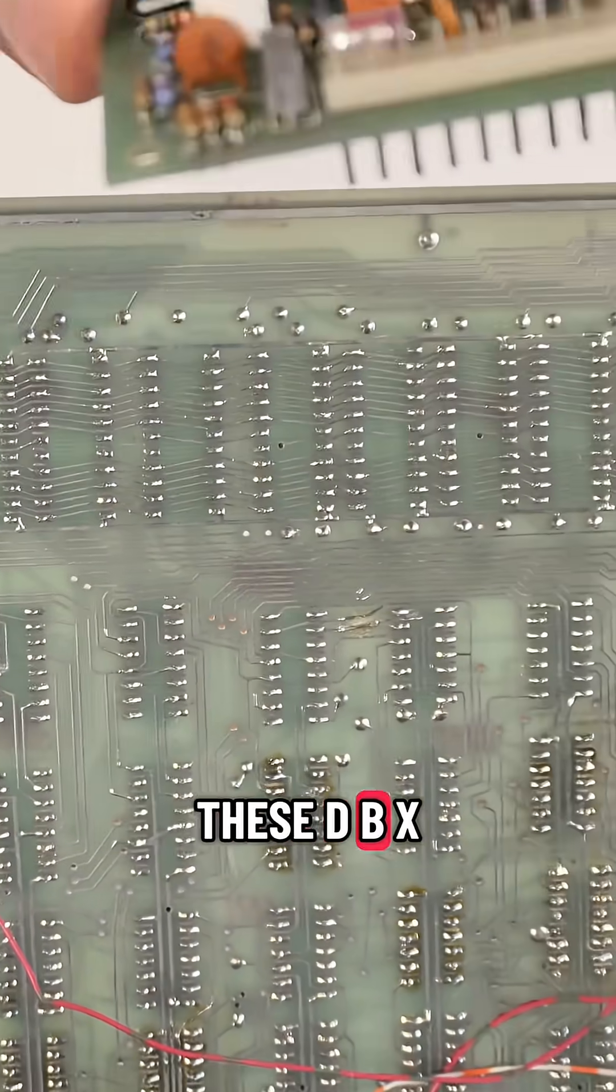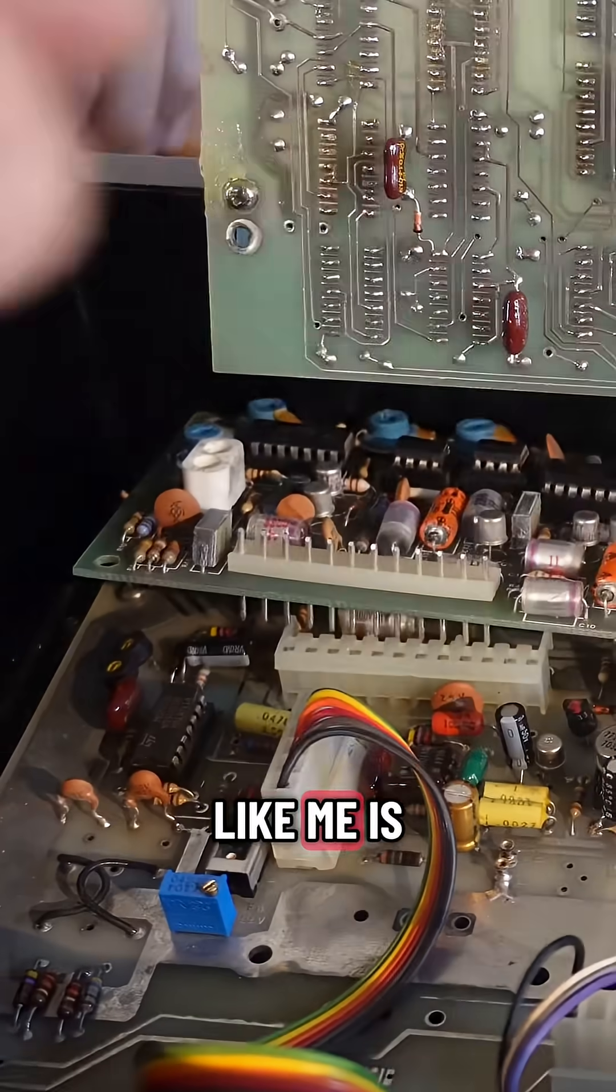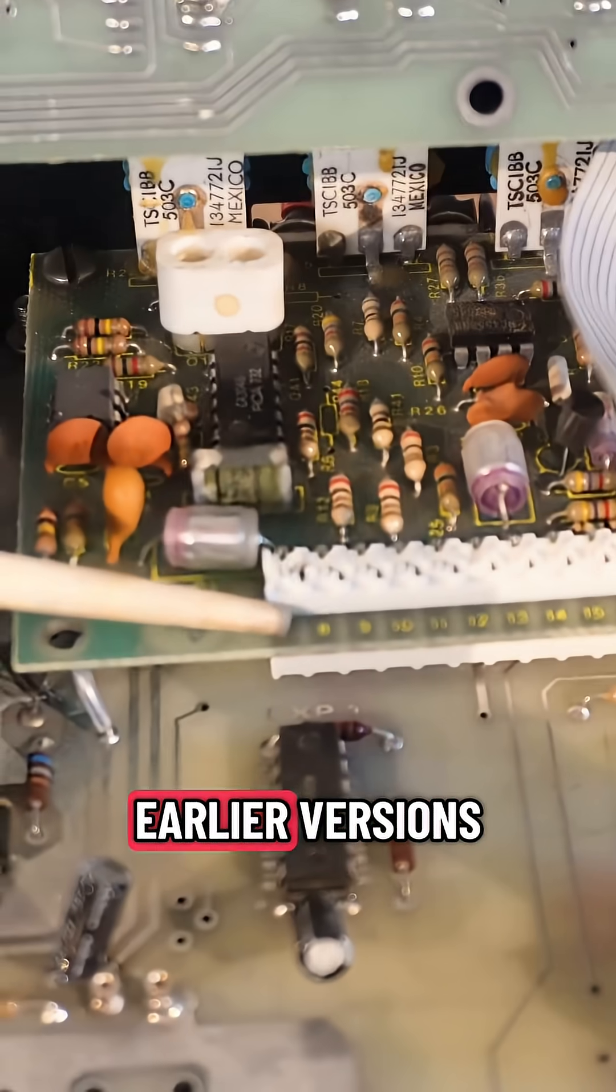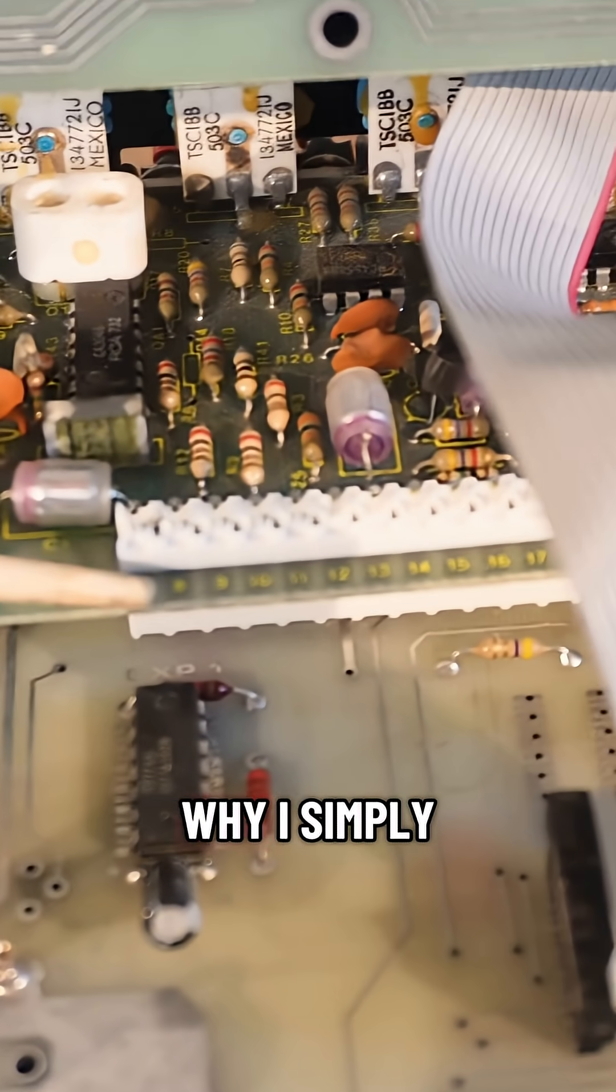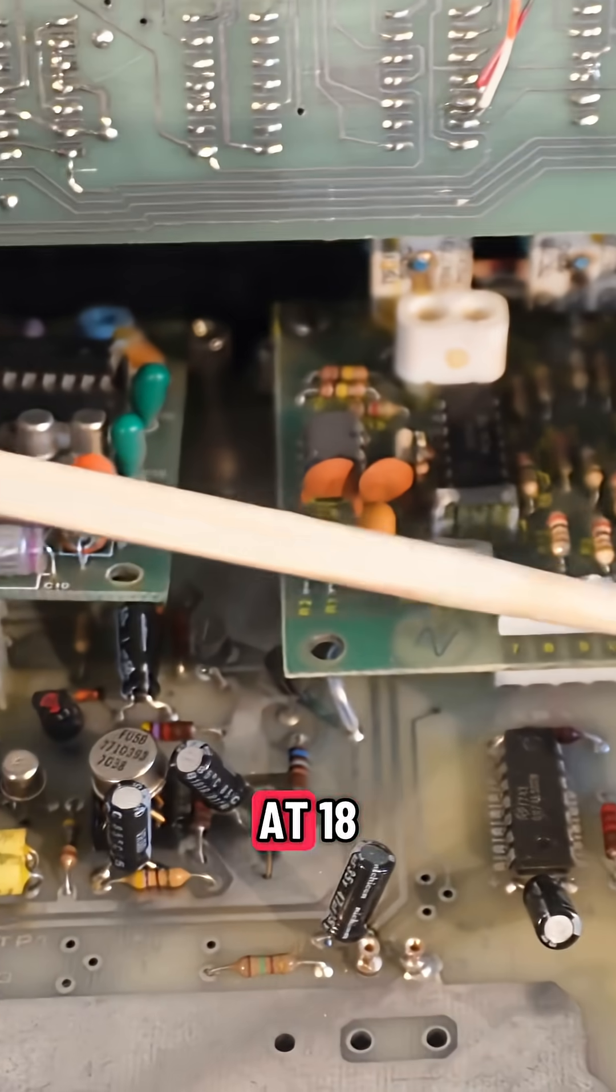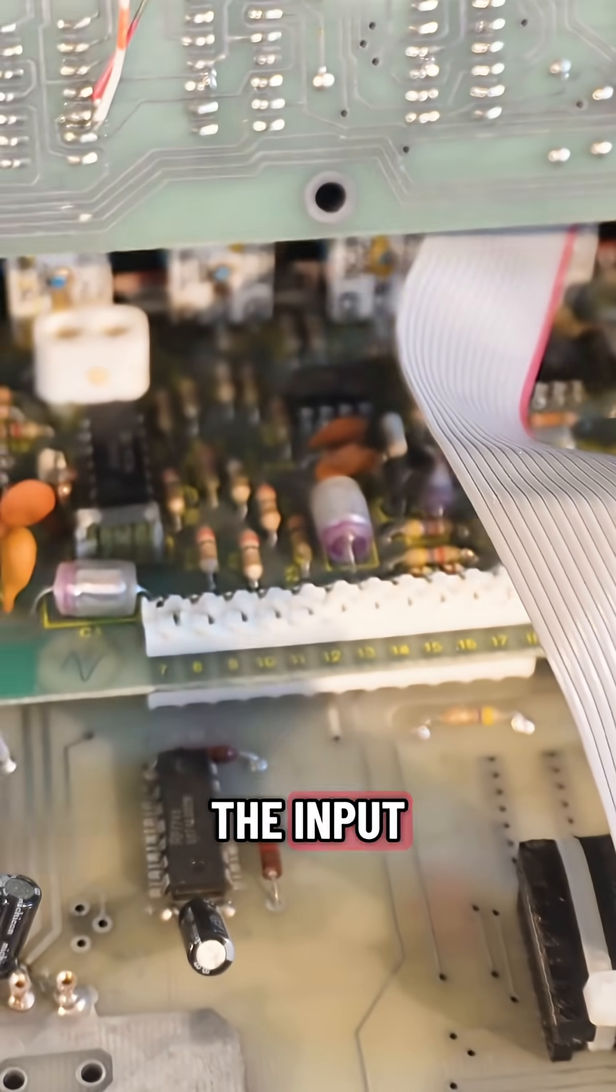Now, something about these DBX cards that's interesting, if you're a huge dork like me, is that pin 2 is actually pin 8 on the earlier versions. Why? They simply don't know. It begins with 7 and ends at 18. I usually just go with pin 2 as the input, pin 6 as the output.